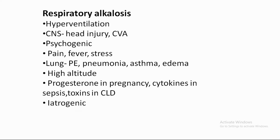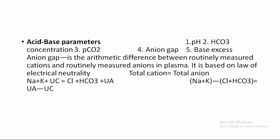There is a simple disorder classification with a sequence: pH, hydrogen ion concentration, primary event, and compensation. For acid-base parameters, there are 4 parameters plus one equation: pH is proportional to bicarbonate divided by partial pressure of carbon dioxide. The anion gap (NIM gap) is also a key parameter, along with base excess, partial pressure of oxygen, oxygen saturation, and hydrogen ion concentration.